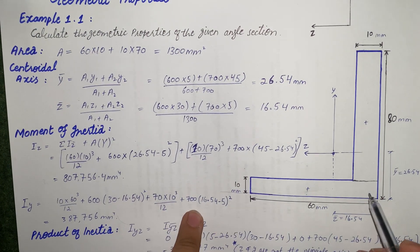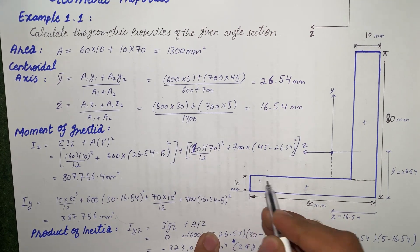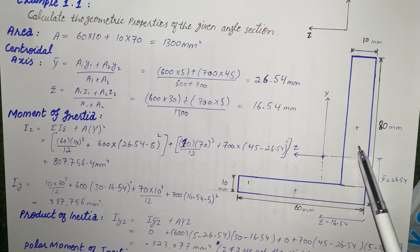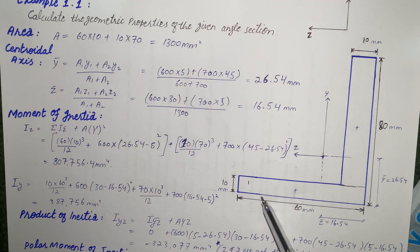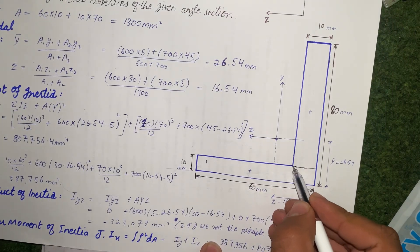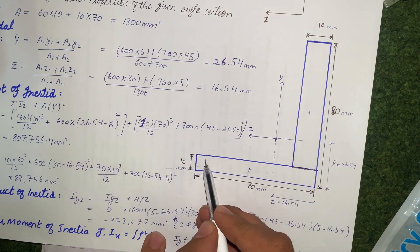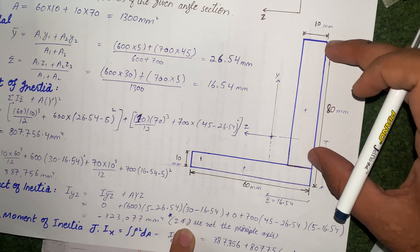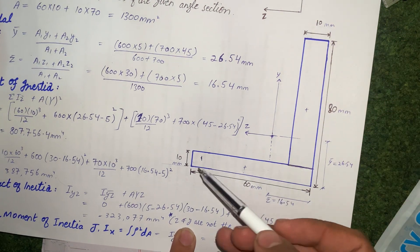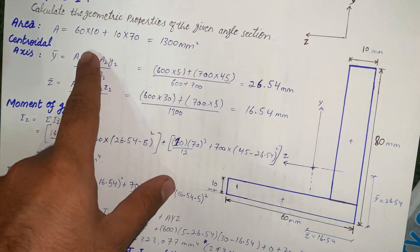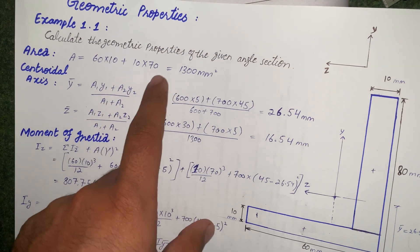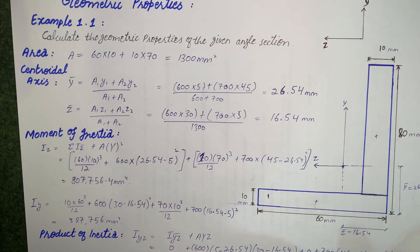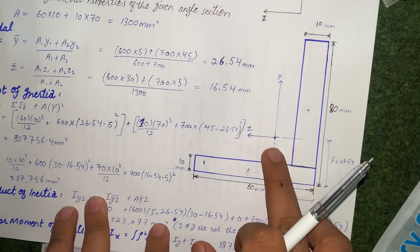To find the total area, divide the L-section into two rectangles: rectangle 1 and rectangle 2. The total area equals area of rectangle 1 plus area of rectangle 2. For rectangle 1, its height is 70 mm (not 80, because 10 is subtracted from 80) and its base is 10 mm. For rectangle 2, the base is 60 mm and height is 10 mm. The total area comes out to 1300 mm².